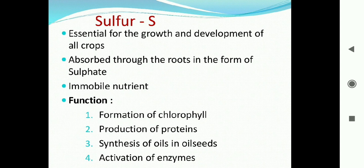The next important element is sulfur. Sulfur is essential for the growth and development of all crops. It is one of the important macro elements required in large quantities but categorized as a secondary macro element. It is absorbed through the roots in the form of sulfate. Sulfate is an immobile nutrient, so like calcium, deficiency symptoms appear on younger parts of the plant.